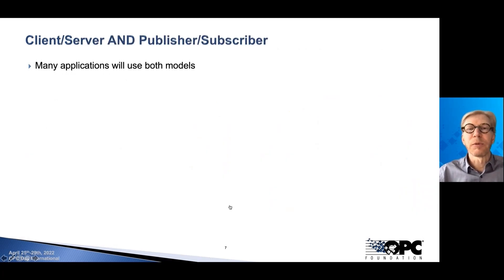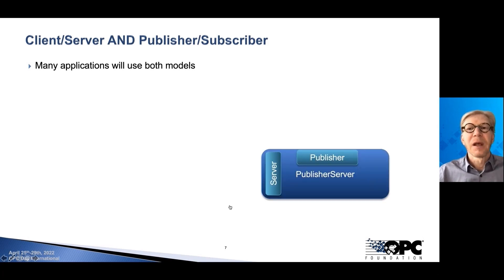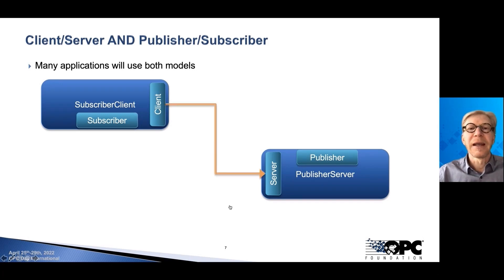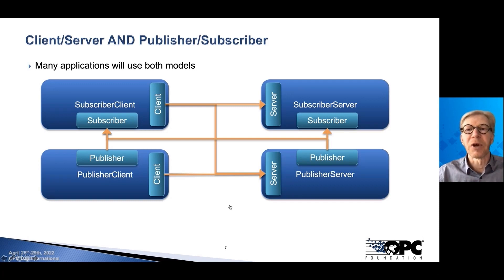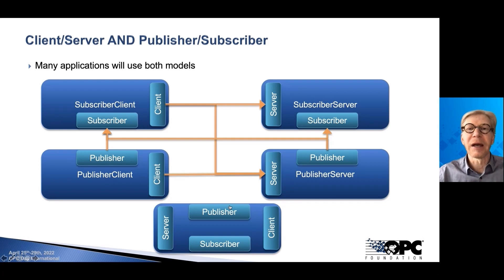Many applications will in practice use both models because each has its own benefits. We can have a publisher-server that combines server and publisher functionality, and a subscriber-client. In this case the subscriber-client can use client functionality to configure the server or browse the address space to find what's available, and then subscribe to the data being published by the publisher-server. We can also have a publisher-client that converts client-server communication to PubSub, or a subscriber-server that converts it the other way. Many applications can have all of these functionalities, giving us the most efficient combinations.